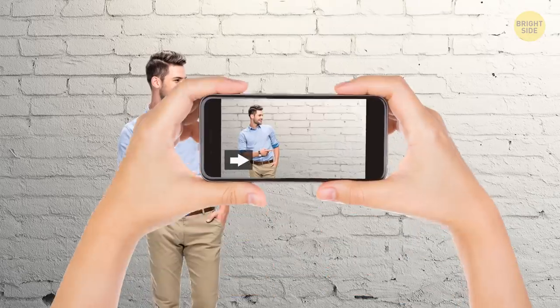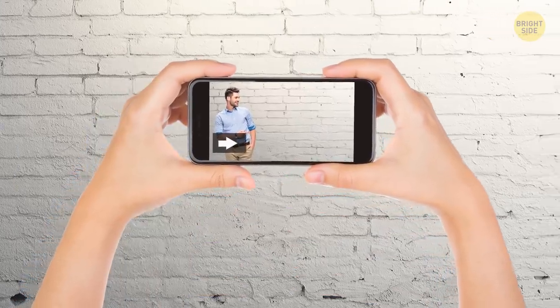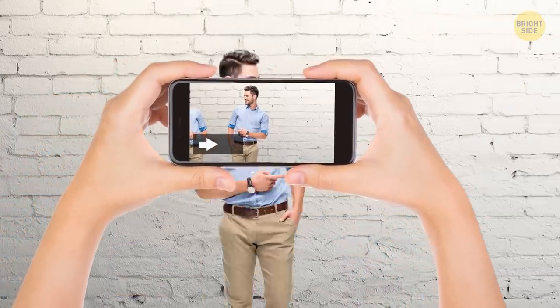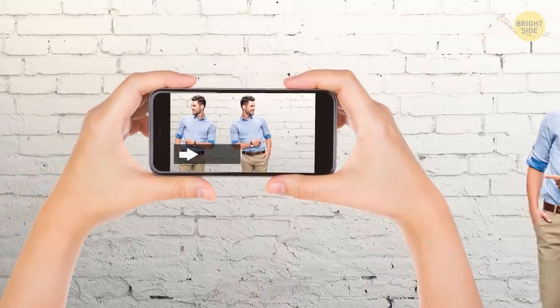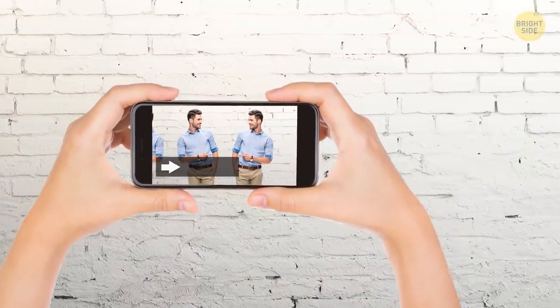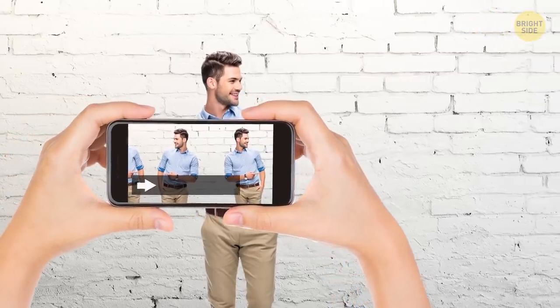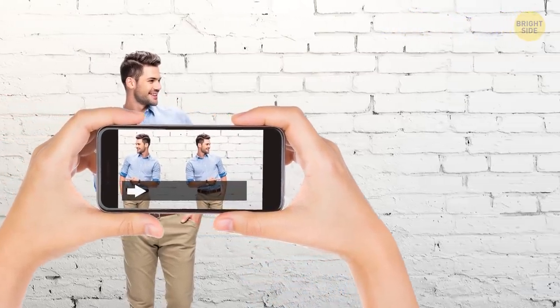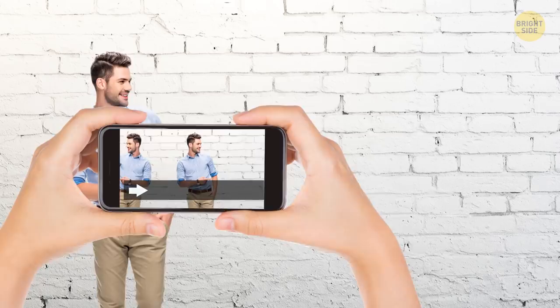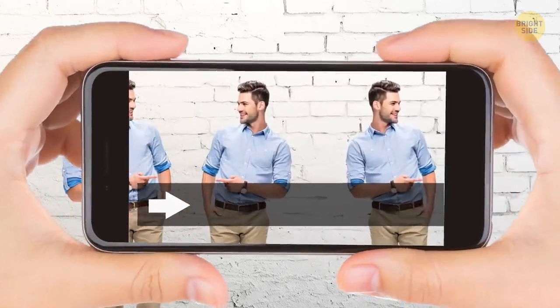Create fake twins with the help of panorama mode. Position your model on the left side of the photo. Start slowly moving the camera along the center line. Meanwhile, the person must run out of the picture and move to the right behind your back. This way, the camera catches them again. Keep going until you get enough twins in the picture.